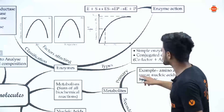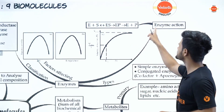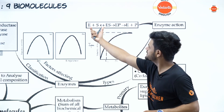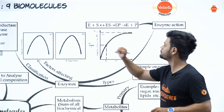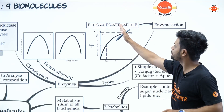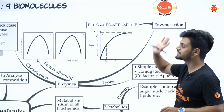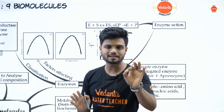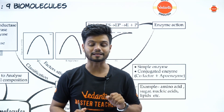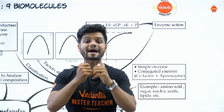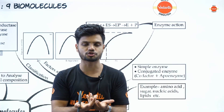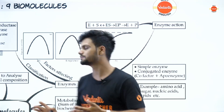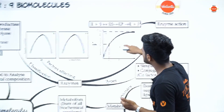Then we have enzyme action. The sequence is: enzyme plus substrate forms an enzyme-substrate complex, which becomes an enzyme-product complex, and then enzyme and product separate. This tells us that the enzyme reduces the activation energy so that reactants can become products.